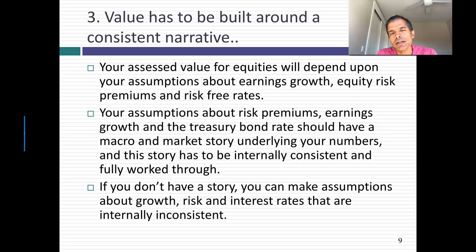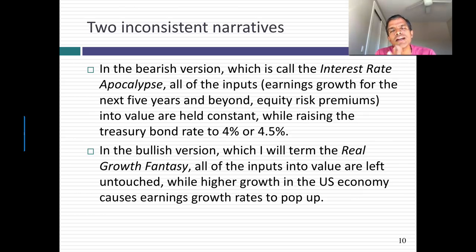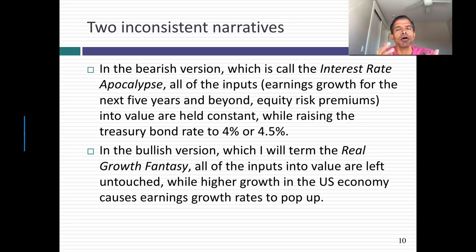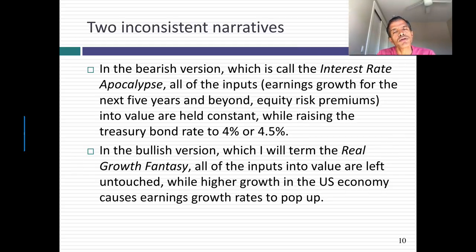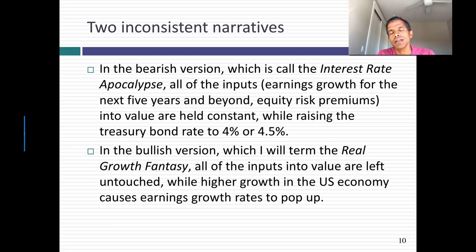Here are two incomplete narratives. The first is the interest rate story from bearish analysts: the T-bond rate pops to 4.5% but everything else stays unchanged. Something must be causing rates to increase — it's an incomplete story — and not surprisingly, if you just raise rates and leave earnings growth and equity risk premiums unchanged, stock prices collapse. At the other end, the bullish growth-only narrative says earnings growth pops due to tax cuts but risk premiums and T-bond rates don't change, so value just pops. Neither of these stories is complete.